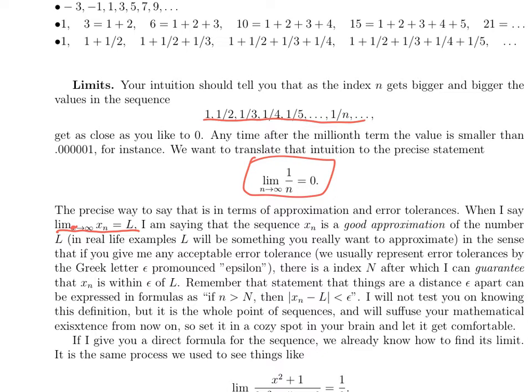What a good approximation means is that if somebody gives you an acceptable error tolerance, you need to guarantee your approximation is within this quantity. We usually represent error tolerances by the Greek letter epsilon. So if you need to get within a certain error tolerance, you can guarantee that by going far enough out on the sequence. You can offer an index capital N, after which I can guarantee that all the x_n's are a distance less than epsilon from L.